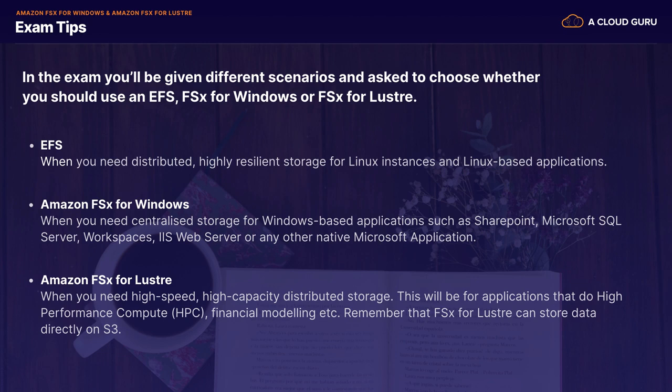On to my exam tips. In the exam, you're going to be given a whole bunch of different scenarios and asked to choose whether you should be using EFS, FSx for Windows, or FSx for Lustre. For EFS, you use this when you need distributed, highly resilient storage for Linux instances and Linux-based applications. Amazon FSx for Windows is when you need centralized storage for Windows-based applications such as SharePoint, SQL Server, WorkSpaces, IIS Web Server, or any other native Microsoft application. And if you see the phrase SMB — you need SMB storage — then you're going to use Amazon FSx for Windows.